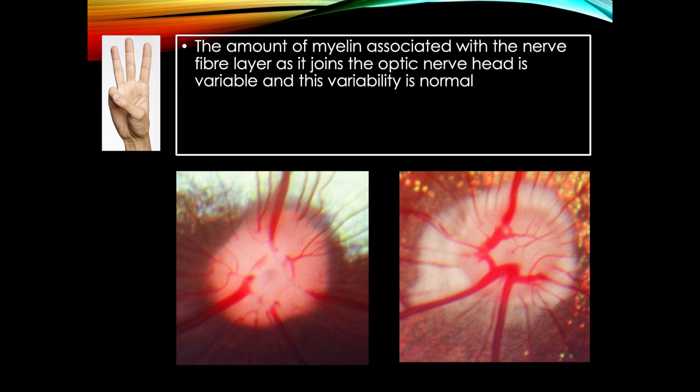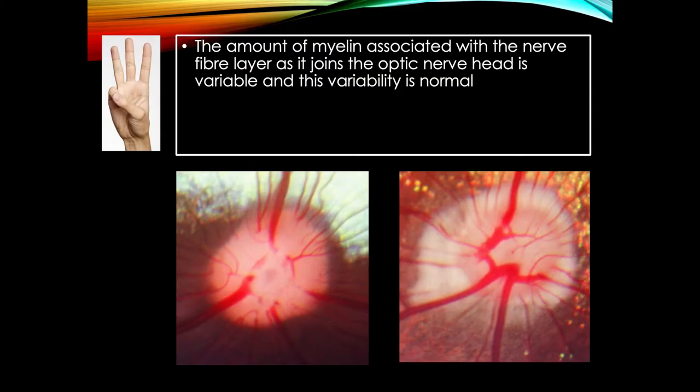Rule three: the amount of myelin as it approaches the optic nerve head is variable and that variability is a normal finding. Here's the optic nerve head, and here's myelin associated with the nerve fiber layer as it approaches. There is no pathology associated with the amount of myelin as it enters the optic nerve head.